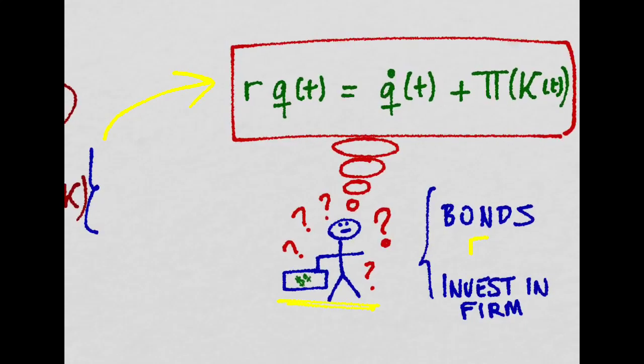For you to be indifferent between the two, they have to be equal to each other. So if you invest in the firm, you will get this for your Q dollars, and if instead you invest those Q dollars in bonds, you will get this return. And in equilibrium, these two amounts have to be equal.